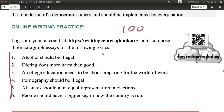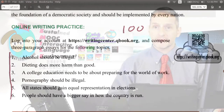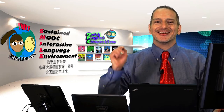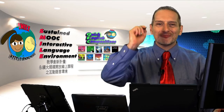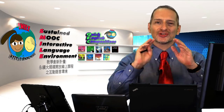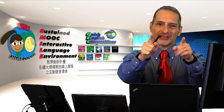There are other topics you can choose — choose one of these. 'Dieting does more harm than good,' maybe. 'A college education needs to be about preparing for the work world' — this is more about education. Choose one of those, 100 words. Don't be shy. Make your argument strong. Good luck.